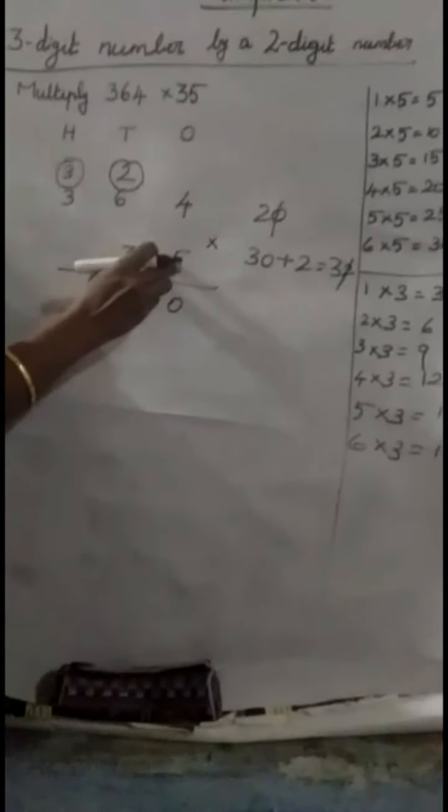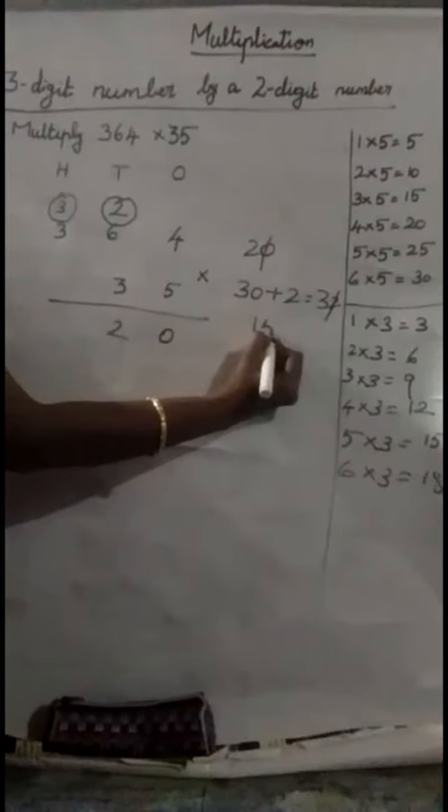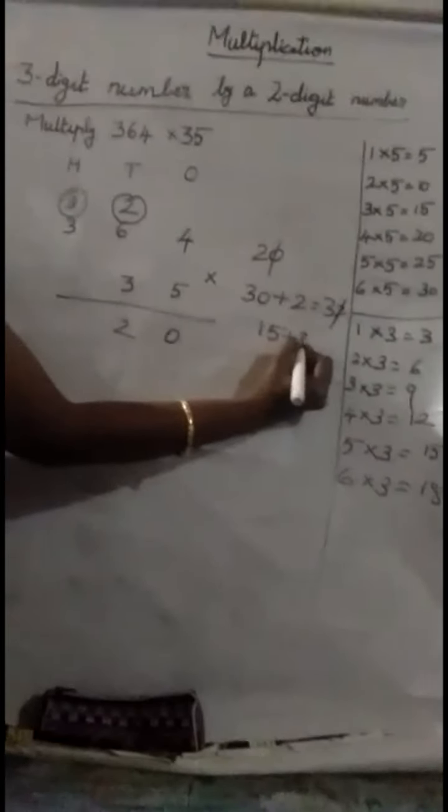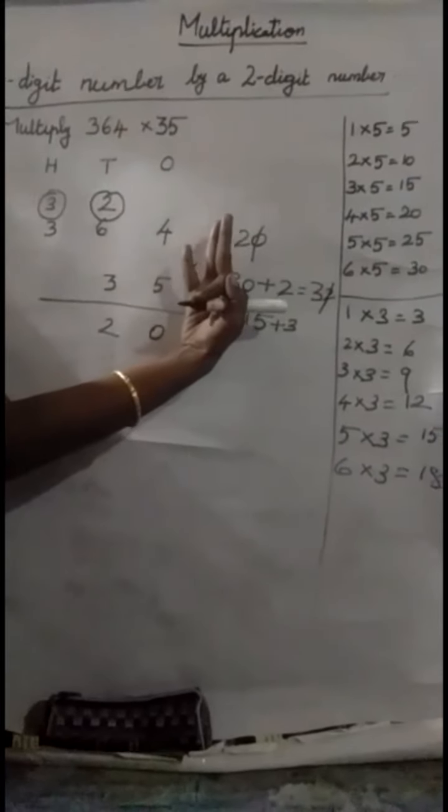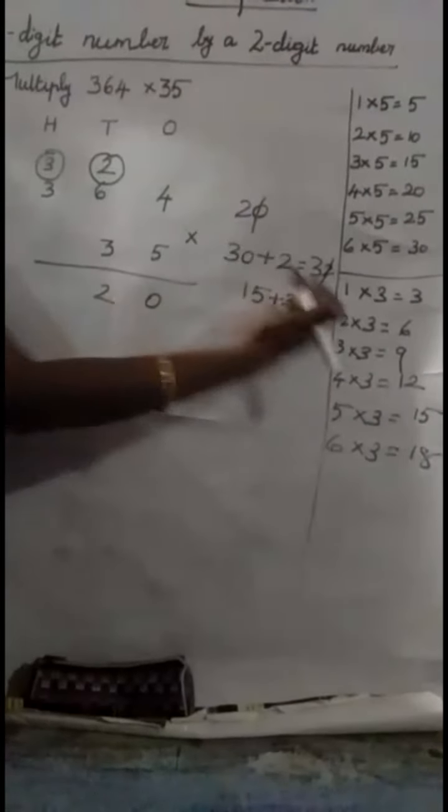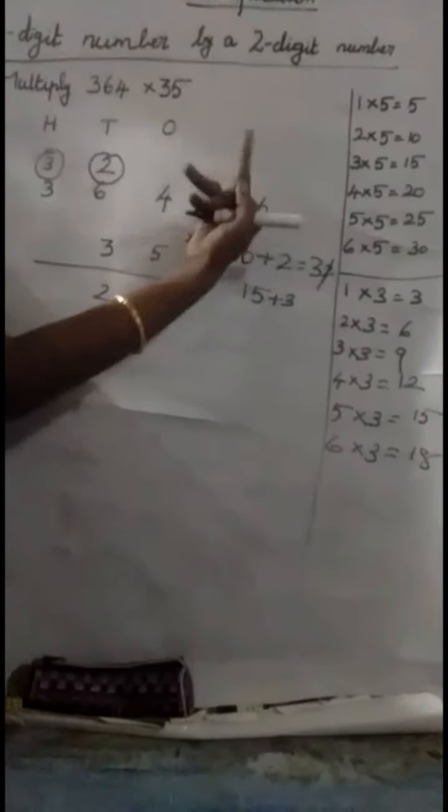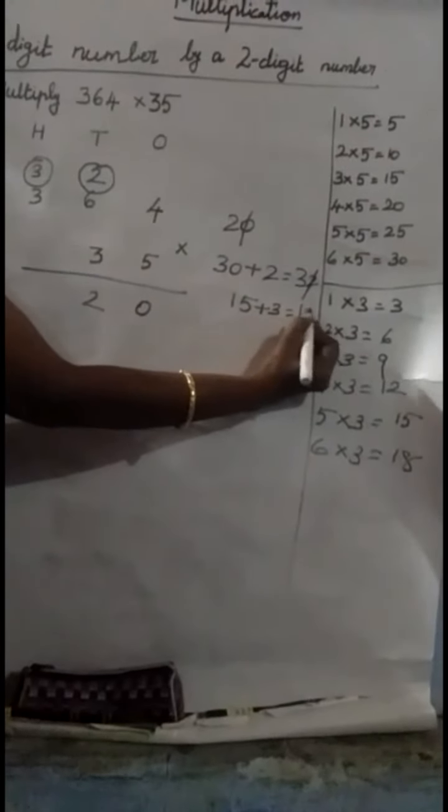Now, 3, 5s are 15. 15 plus 3. 15 in the mind. 3 in the finger. 15 after. 16, 17, 18. So, equal to 18.